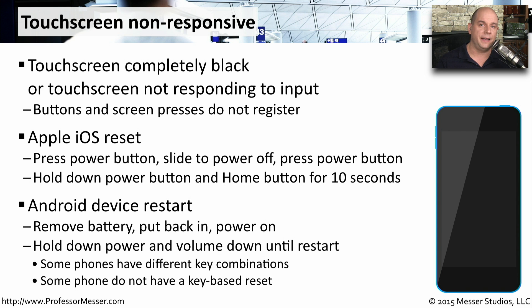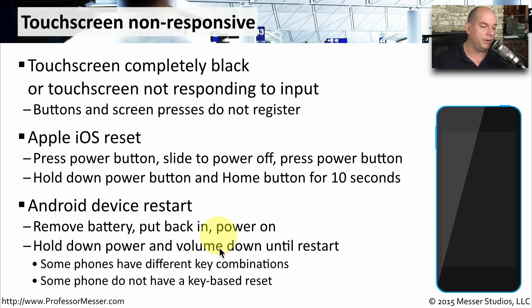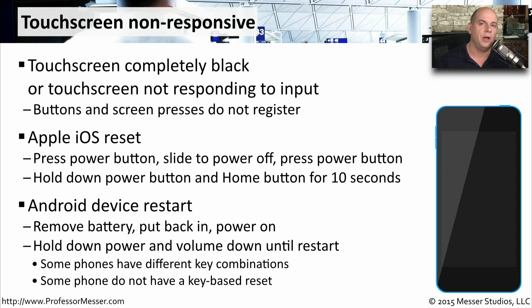On most Android devices, we can simply remove the battery to perform a hard reset — remove it, put it back in, and then try powering on the phone again. There might also be a number of key presses you can use to reset the phone, such as holding power and volume down until the phone restarts. Different phones use different methods, so check your phone documentation for the correct hard reset process.